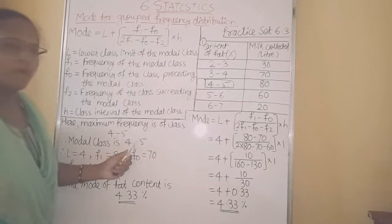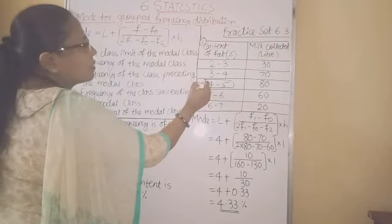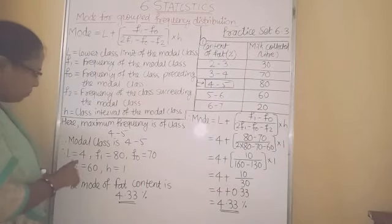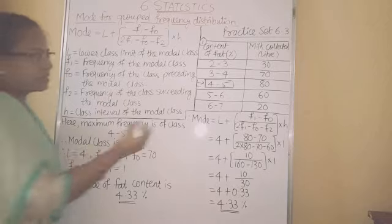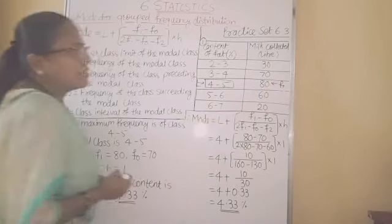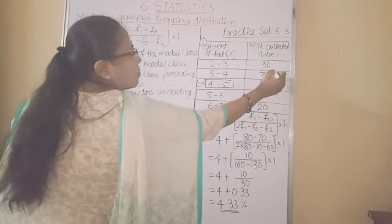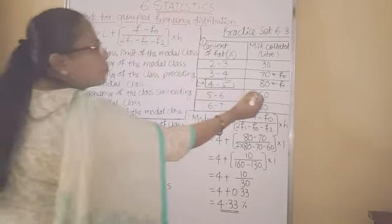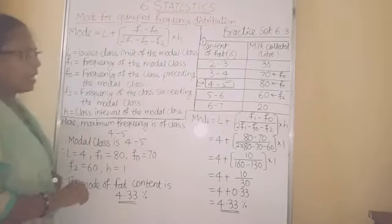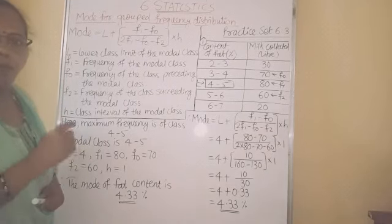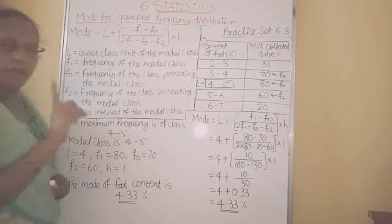The modal class is 4 to 5. The lower limit of the modal class gives us L, so L is equal to 4. F1 is the frequency of the modal class, so F1 is equal to 80. F0 is the frequency of the class preceding the modal class, so F0 is equal to 70. F2 is the frequency of the class succeeding the modal class, so F2 is equal to 60. H is class interval: upper class limit minus lower class limit of model class — 5 minus 4 equals 1, so H is equal to 1.